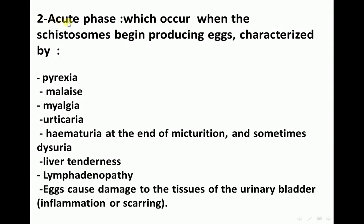The second stage is the acute phase, which occurs when the schistosomes begin producing eggs. It is characterized by pyrexia, malaise, myalgia, urticaria, hematuria at the end of micturition, and sometimes dysuria. Liver tenderness and lymphadenopathy may also occur. Eggs cause damage to the tissues of the urinary bladder, including inflammation.